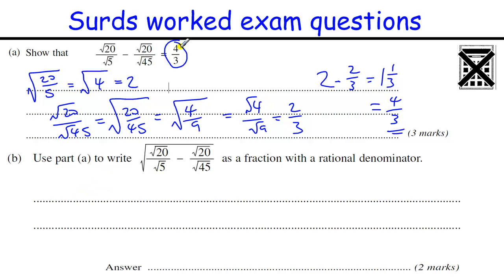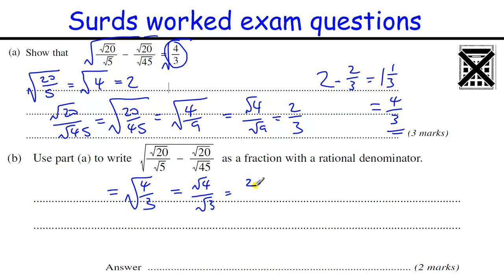Part B does not require you to solve Part A because you're told it's 4 thirds, so you can just use that value. The expression is just the square root of 4 thirds. To rationalise the denominator: that's the square root of 4 over the square root of 3, which is 2 over root 3. Multiply top and bottom by root 3: we get 2 root 3 over 3. That's the answer.